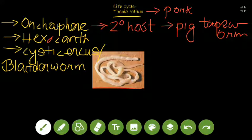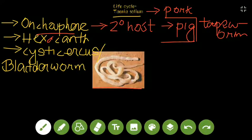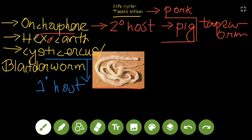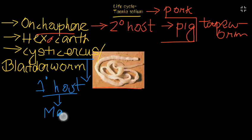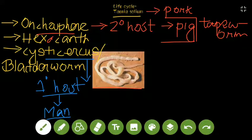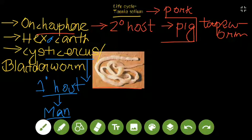The secondary host, that is the pig, is attacked by oncosphere. The cysticercus — the last larval stage — attacks the primary host, which is man. Man gets Taenia solium inside him upon consumption of undercooked measly pork. So the primary host is affected by cysticercus and the secondary host is affected by oncosphere.